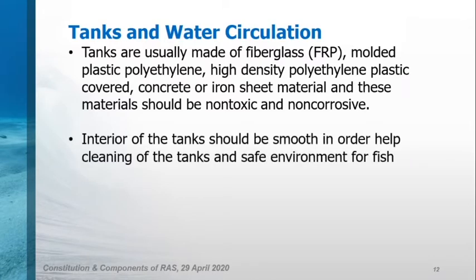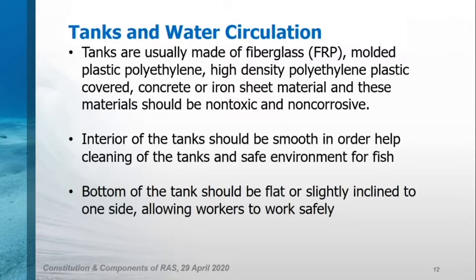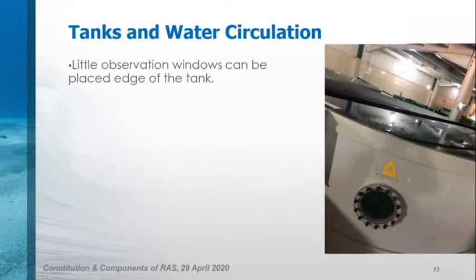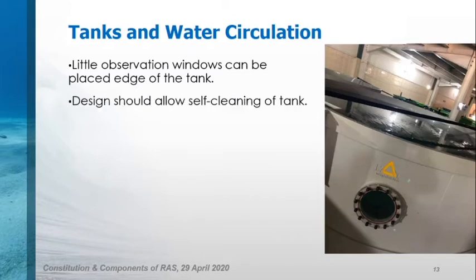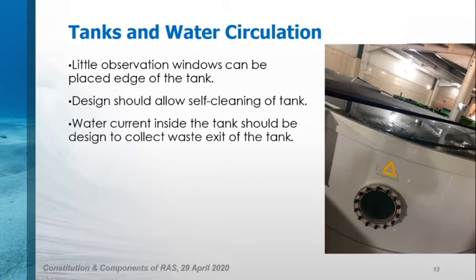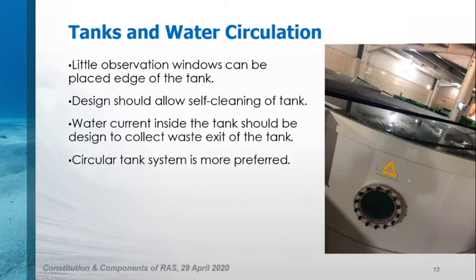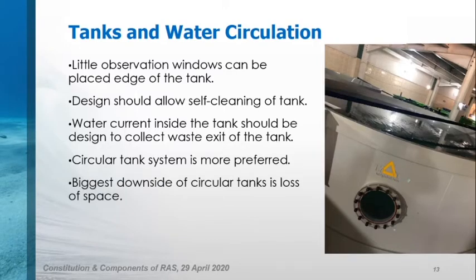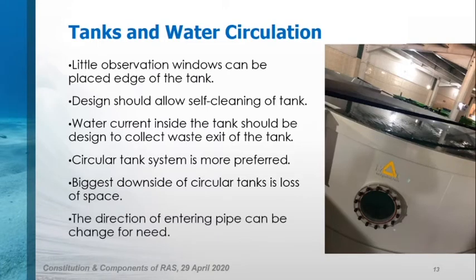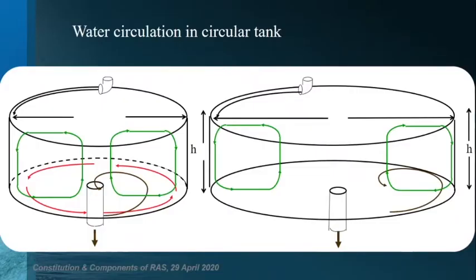The interior of the tanks should be smooth to help with cleaning and provide a safe environment for fish. The bottom of the tank should be flat or slightly inclined to one side, allowing workers to work safely. An observation window can be placed at the edge of the tank. This window is very helpful because when you want to check the fish, you can use this window avoiding stress on the fish. Design should allow self-cleaning, and the water current inside the tank should be designed to collect waste and exit it from the tank. Circular tank systems are more preferred in RAS. However, the biggest downside of circular tanks is loss of space. The direction of the entry pipe can be changed as needed because water circulation is directly affected by the water intake.